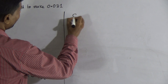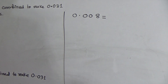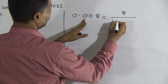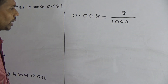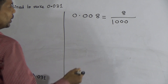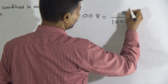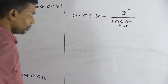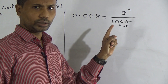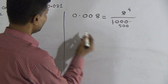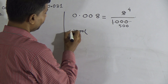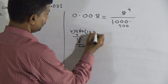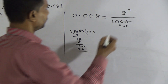Next, 0.008 equals 8 — for the point write 1, then three zeros for the three decimal places, giving 8 by 1000. Divide numerator and denominator by 2 to get 4 by 500. Divide again by 4: numerator becomes 1, denominator becomes 125. So 0.008 equals 1 by 125.